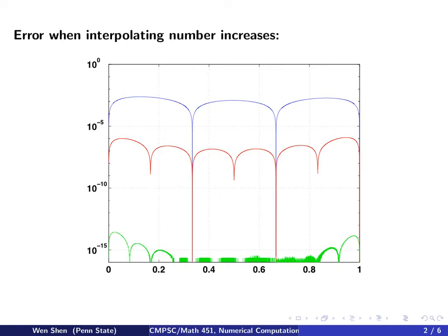What we did next was choose a midpoint right in the middle of each interval. Note that this is still a uniform distribution of your points. By doing that, now we have 6 intervals and 7 points, and we compute the interpolation polynomial again and find this error — we see it now reduces to 10 to the negative 6.